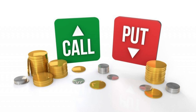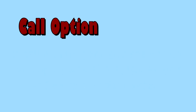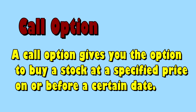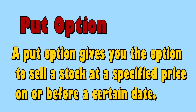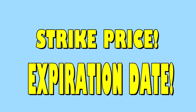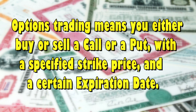calls and puts. A call option gives you the option to buy a stock at a specified price on or before a certain date. A put option gives you the option to sell a stock at a specified price on or before a certain date. That specified price is called the strike price, and that certain date is called the expiration date. Options trading means you either buy or sell a call or a put with a specified strike price and a certain expiration date.